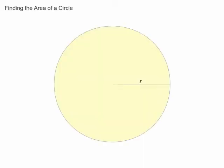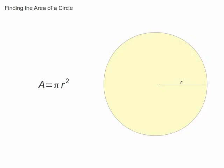If you know a circle's radius, you can find its area simply by plugging the radius's measure into the formula: area equals pi times the radius squared.